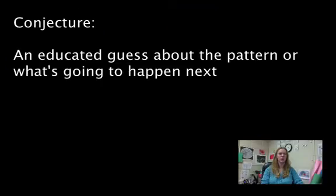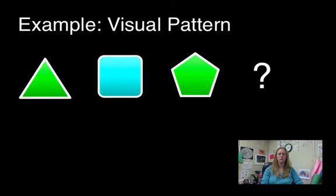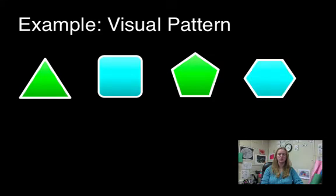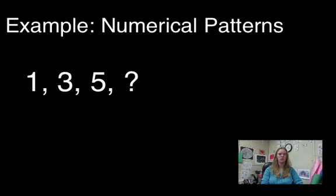The guess about the pattern or what's next in the series is called a conjecture. A conjecture may or may not be right so we have to test it to see. For the visual example this would be the next symbol in the series and for the numbers 1, 3, 5, the next one would probably be 7. Those are both good conjectures based on the evidence that we have.